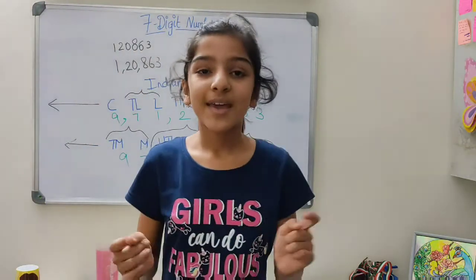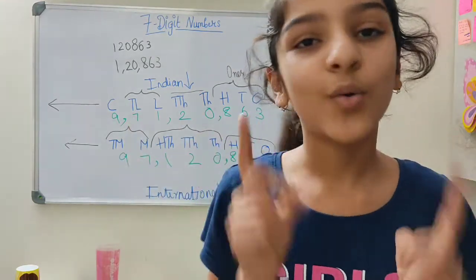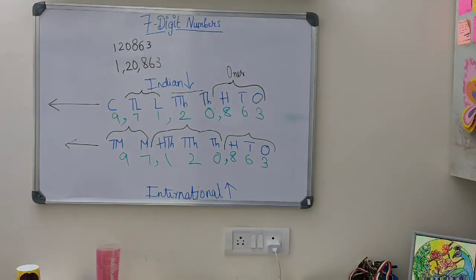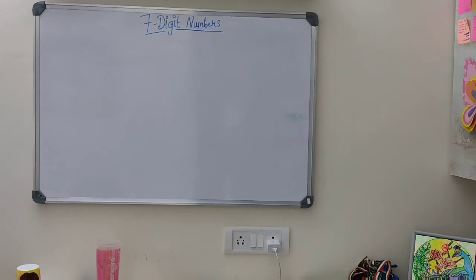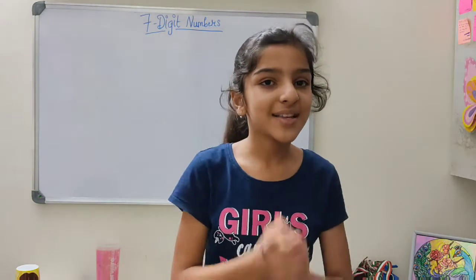Next, we are going to learn how to arrange numbers in order. It is easy to compare two numbers if they have different numbers of digits. Like if I tell you to compare 623 and 1623, it's obvious that 1623 is larger because it has more digits.